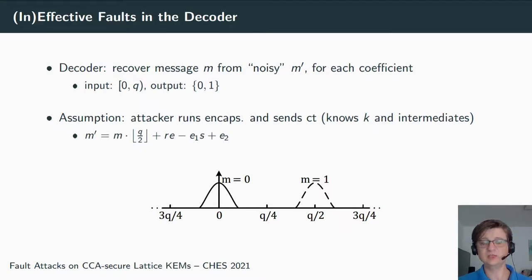Remember that this decoder recovers the message m from this noisy m'. For each coefficient, it takes input values between zero and q; it outputs a single bit, zero or one. So even if we shoot in there randomly, then we have a 50% chance to get the same bit out of it. But of course we can't do it randomly; we have to do it a little bit more cleverly. We use the assumption that the attacker runs the encapsulation in an honest manner and he sends the ciphertext, meaning that he knows the shared secret and all intermediates that are computed during encapsulation and also during re-encryption.